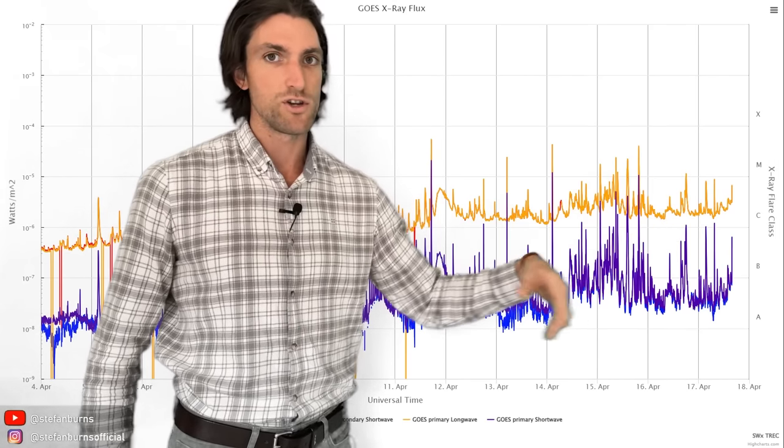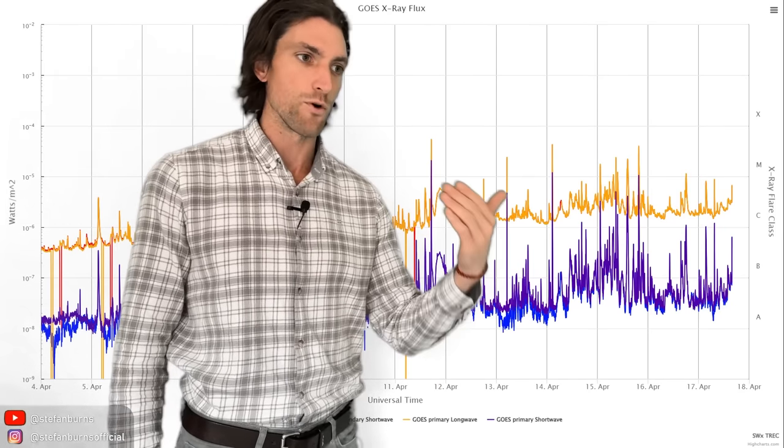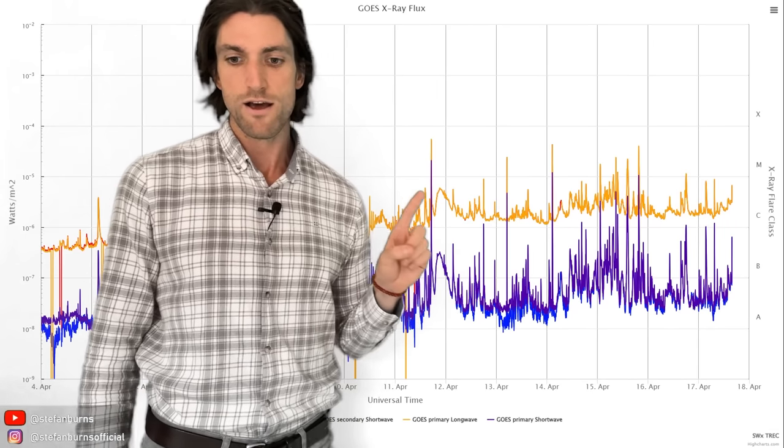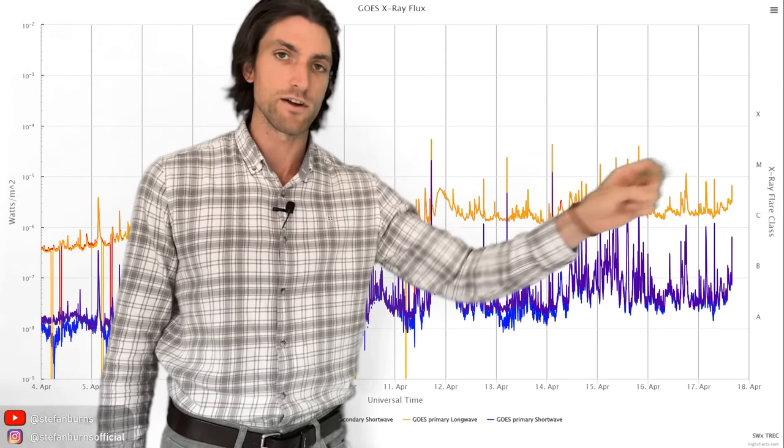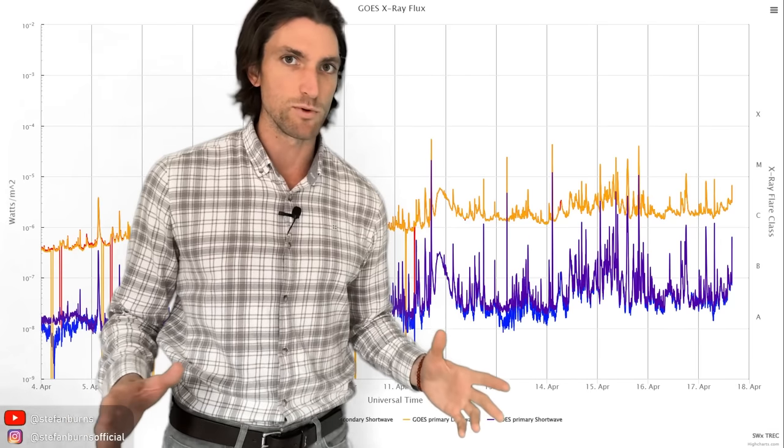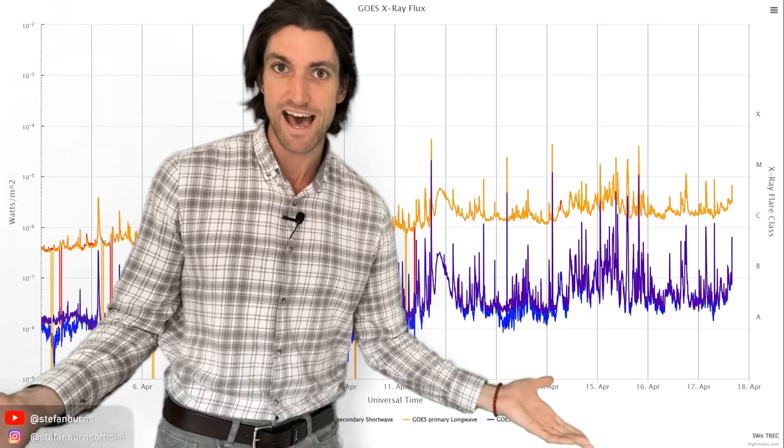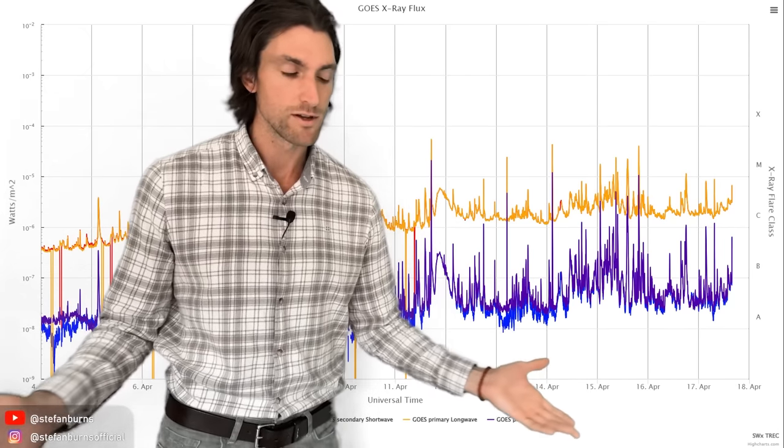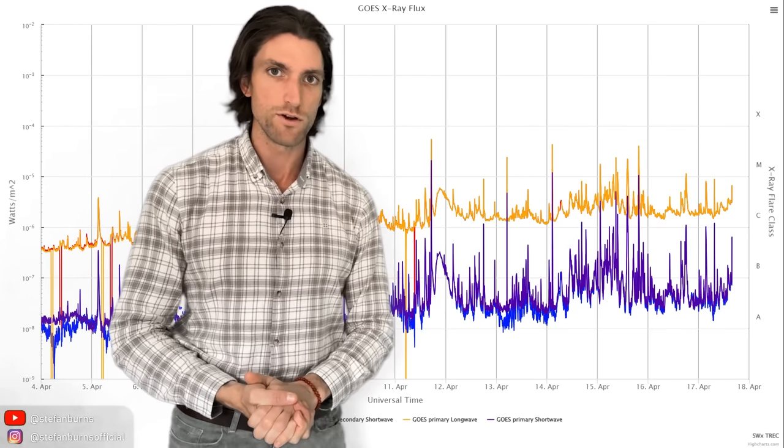And as the sunspots rotate into that Earth strike zone, if they launch even a sizeable M-class flare, this could be significant for energetic conditions on our planet. Of course, they could do something larger. They could launch into the X-class flare territory. It's highly possible that southern sunspot that's very wide and big already did that multiple times. So it's definitely not something to discount. That's why I'm making this space weather update video for you.